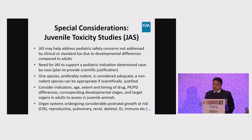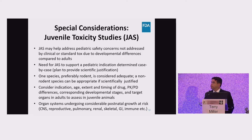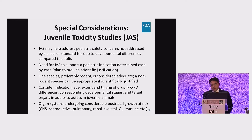Juvenile animal studies may help address pediatric concerns not addressed by clinical or tox studies in adult animals; however, the need for such studies to support a pediatric indication is determined on a case-by-case basis. You should plan to provide scientific justification for why they are or are not needed. Juvenile studies are typically conducted in one species, preferably rodent. In your studies, consider the indication, the age, extent and timing of dosing, PK-PD differences, the corresponding developmental stages, and the specific target organs identified in adult toxicity studies. There is an increased risk of toxicity to organ systems that undergo considerable postnatal growth, and toxicity in these organs is typically the reason such studies might be recommended.